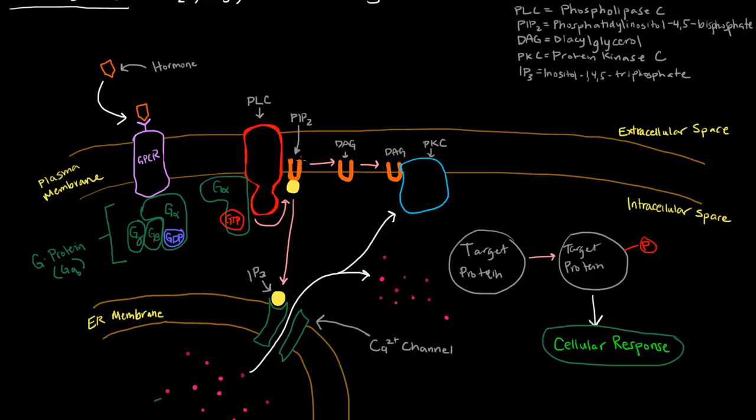It cleaves it into DAG, which I've drawn here, and this little yellow circle, which is IP3. So DAG is diacylglycerol, and IP3 is inositol 1,4,5-triphosphate. Both of these things here are second messengers.